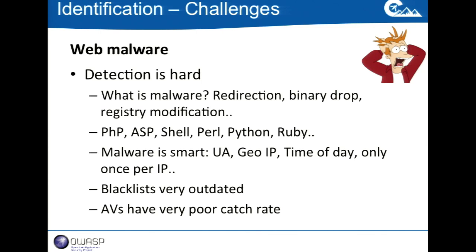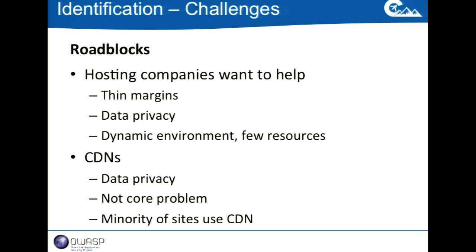Some malware is smarter — it checks if it's the first time you're visiting the website, what user agent you have, what time of day it is, where you're coming from. There are certain pieces of malware which are more sophisticated and avoid shotgun approaches to not get caught. Blacklists are very outdated. A lot of people are actually using VirusTotal to fine-tune the malware they're building — they keep testing until they see no detections, then push it into the web malware payload. No wonder AVs have very poor catch rates, especially for web-based malware.